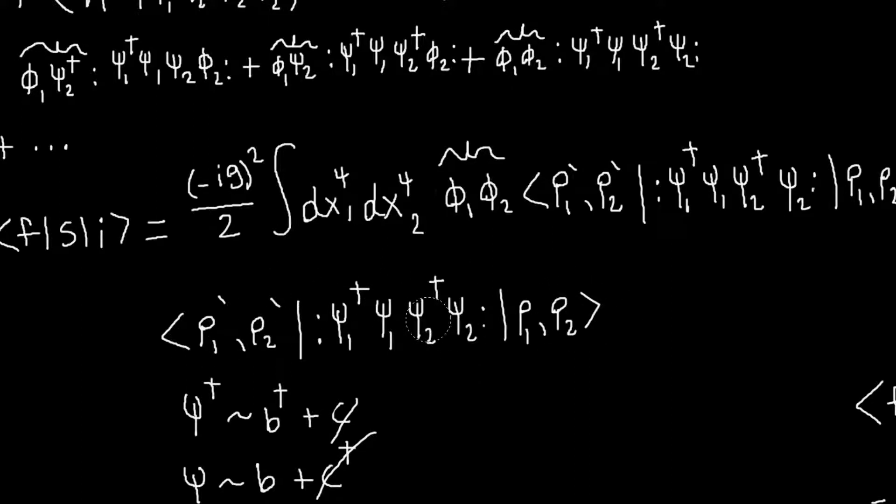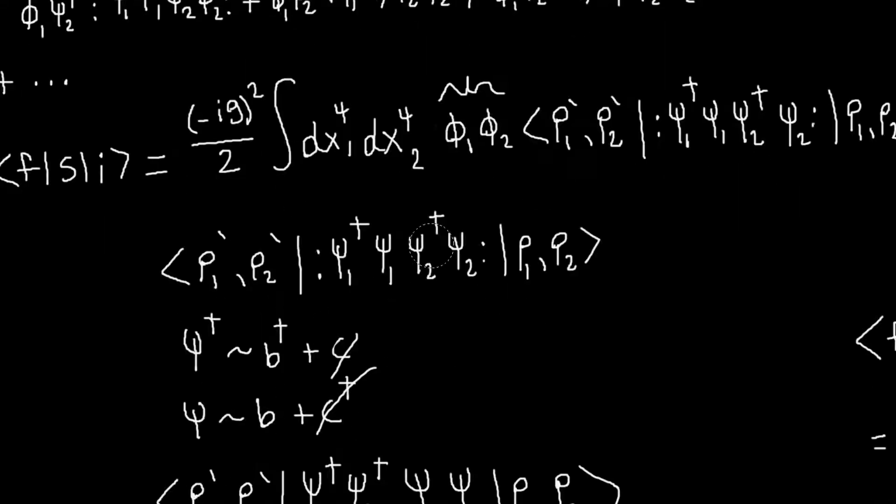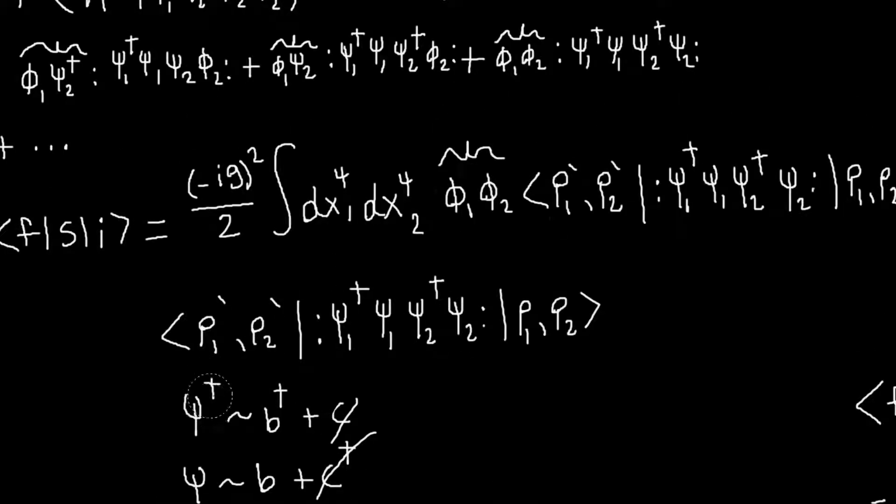So the first thing to take care of is the normal ordering, which is easy to do if we realize that my psi dagger goes as b dagger plus c, and my psi goes as b plus c dagger. But since my states only involve b particles, all the terms involving my c's will cancel, or not cancel, they'll just be zero. They won't give any overlap. So I can basically just throw those terms away, and so my psi dagger will go as b dagger, and my psi will go as b.